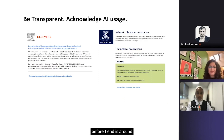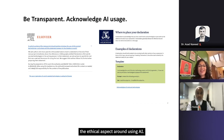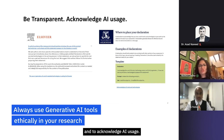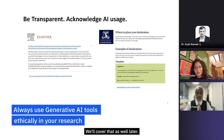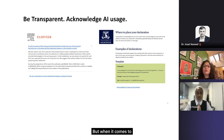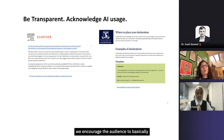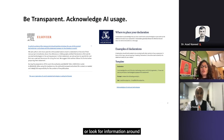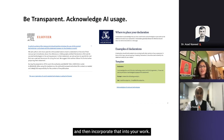The last point before I end is around the ethical aspect of using AI. It's really important to be transparent, honest, and to acknowledge AI usage. We'll cover AI detection later, but when it comes to acknowledging AI usage, we encourage you to look at what you're writing, what guidelines apply — whether from the journal or the university — and then incorporate that into your work.